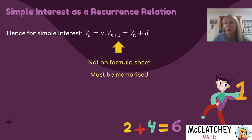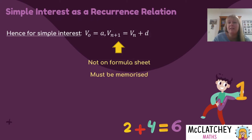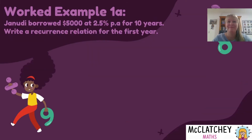Some people really struggle with knowing what to do when they get to a simple interest situation. Just remember: instead of T1, it's V0. Let's try this with a worked example and it will start to make a little bit more sense.